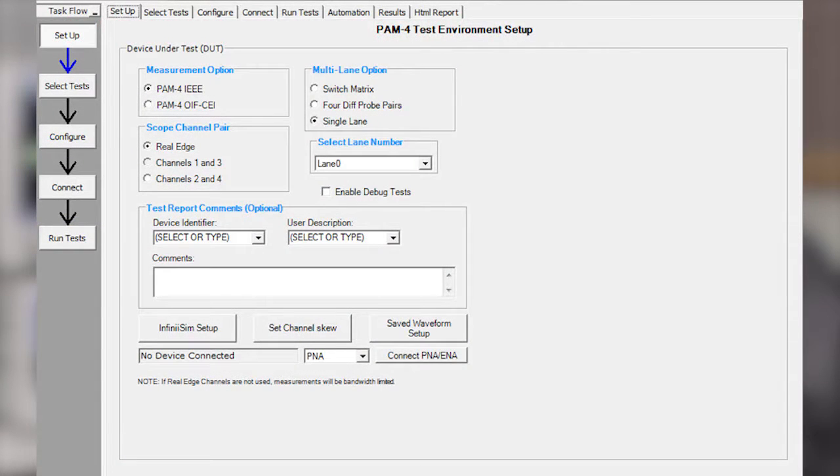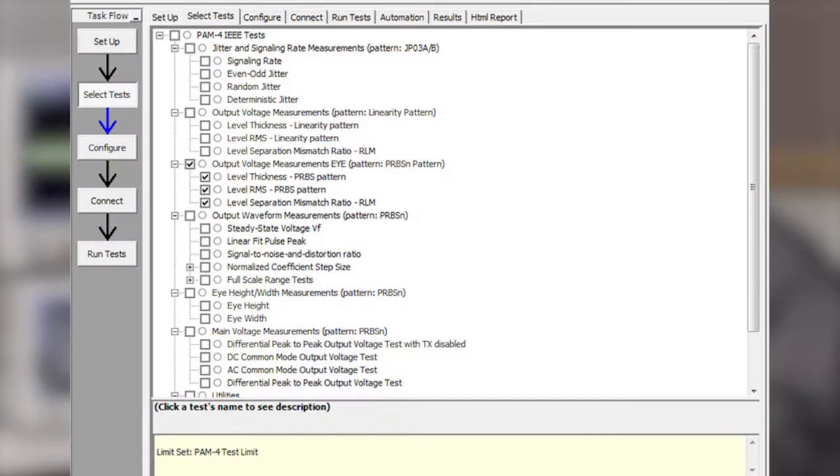So here we have two different standards that we can select, for example, either PAM-4 under the IEEE standard or under the PAM-4 OIF standard. And we're using the real-edge signals, and here I'll go into the different tests that we can do. So now all of these tests are referenced specifically to the standard that you choose.